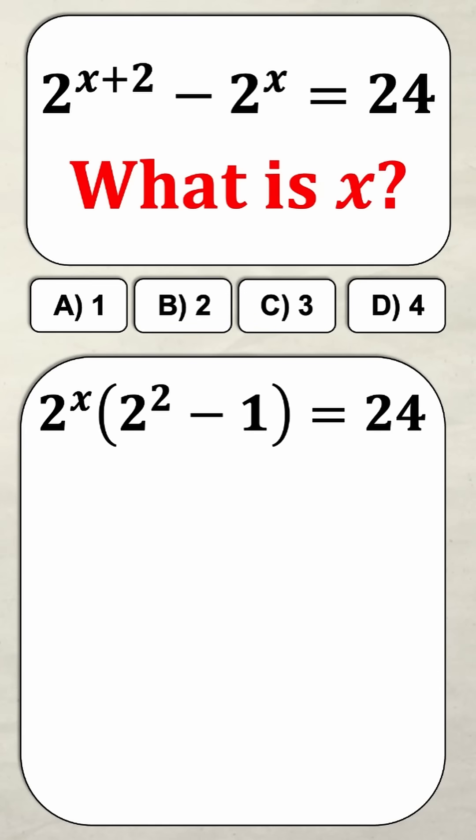Now I can simplify what's inside the brackets that's going to give me 2 to the power of x times 4, 2 squared minus 1, which is equal to 24. Once again simplifying the brackets to 3 gives me 2 to the power of x times 3 is equal to 24.